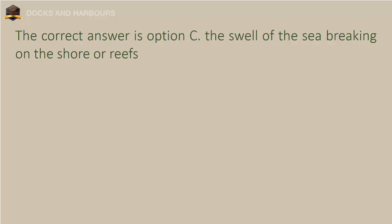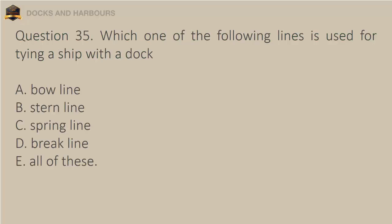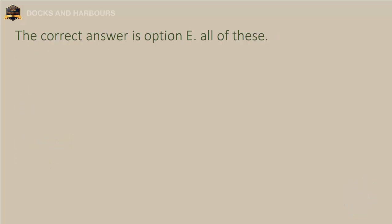Question 35. Which one of the following lines is used for tying a ship with a dock? a. Bowline, b. Stern line, c. Spring line, d. Brake line, e. All of these. The correct answer is option E: All of these.